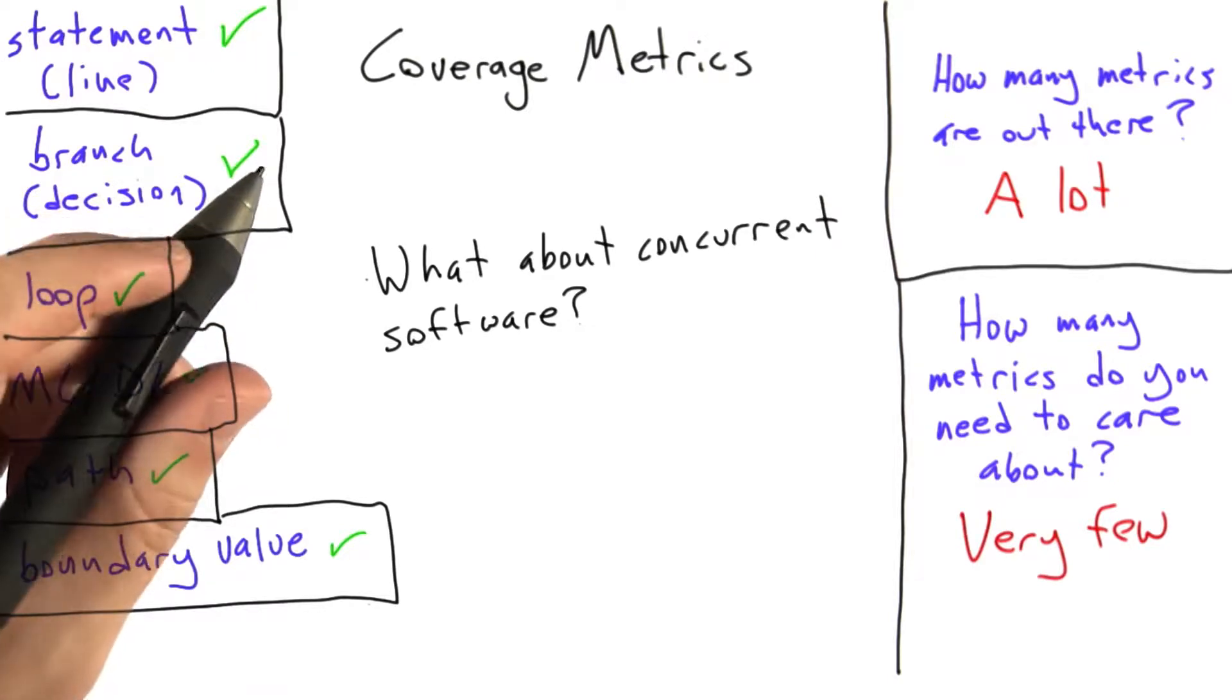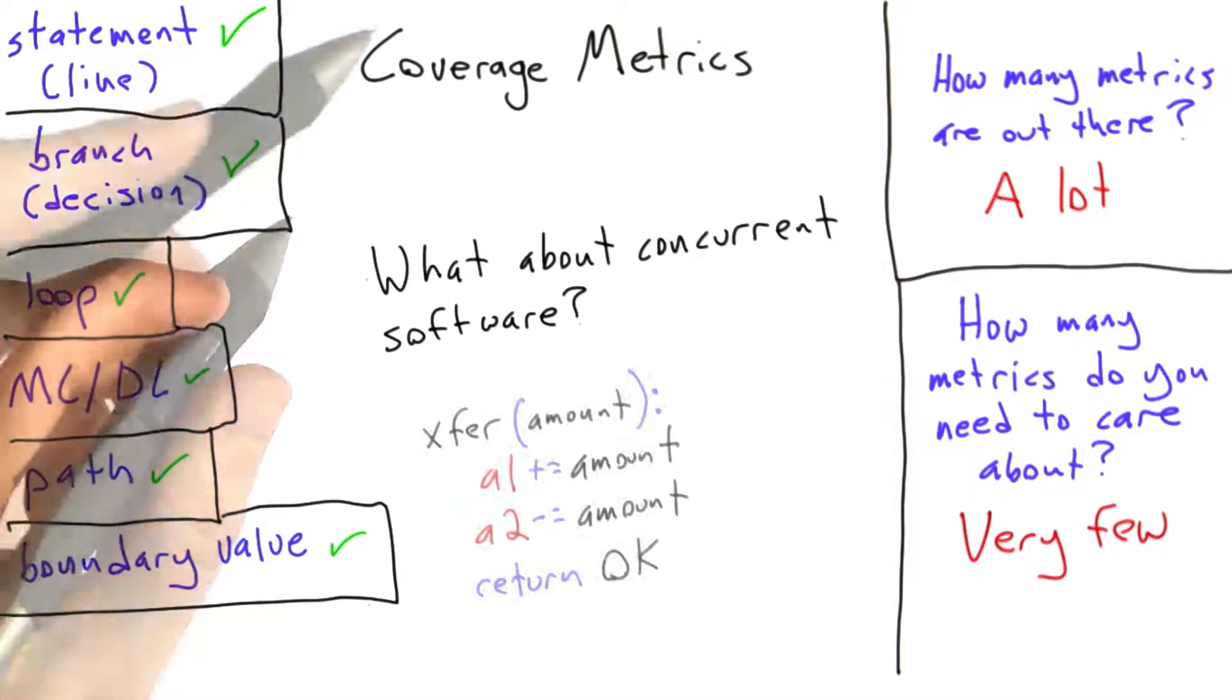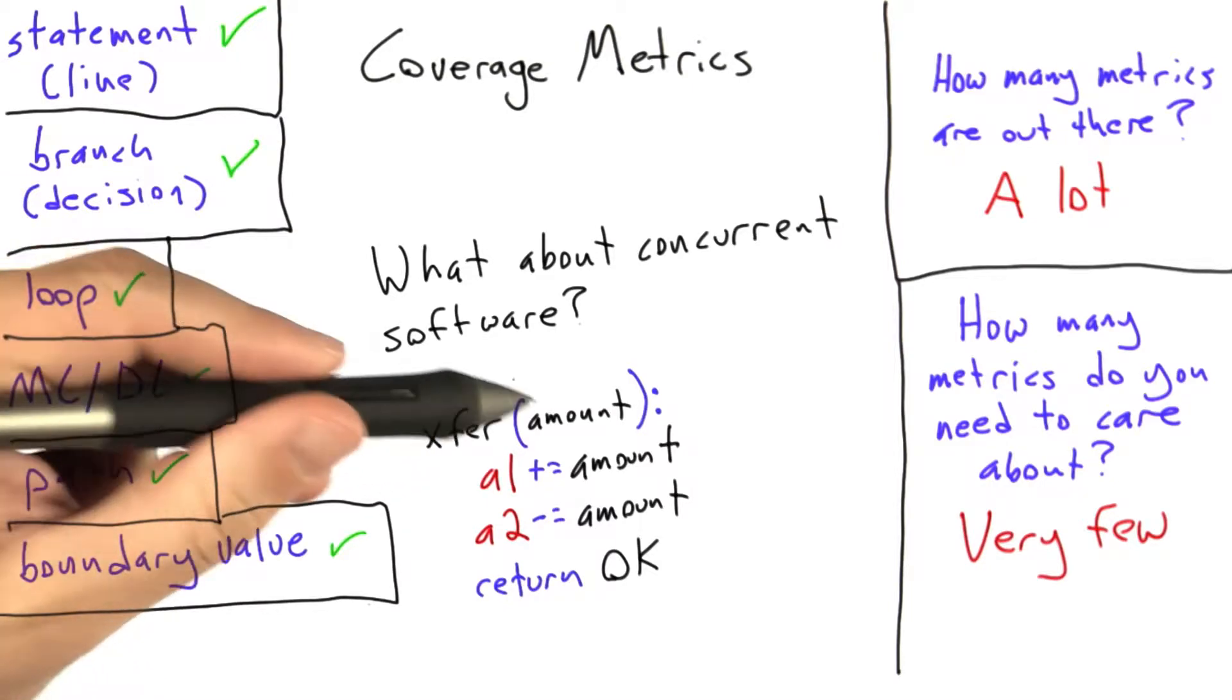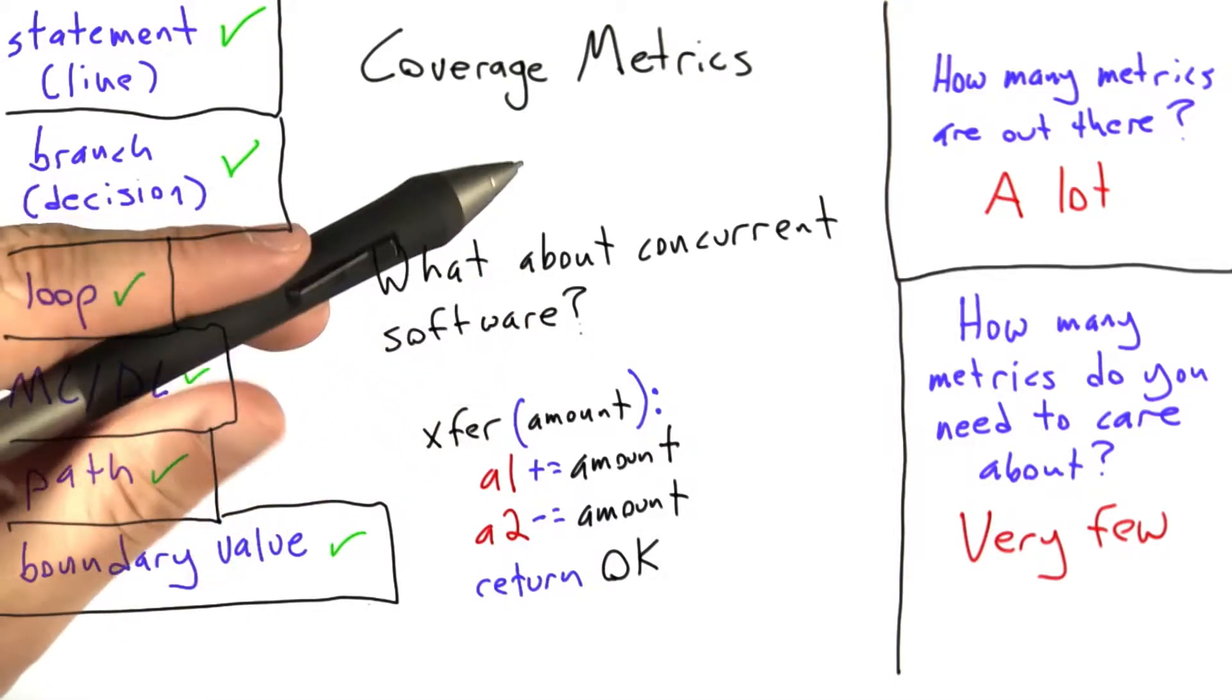So let's talk about how we would figure out if we've done a good job testing concurrent software. Let's take, for example, this function, exfer, which transfers some amount of money between bank account 1 and bank account 2.